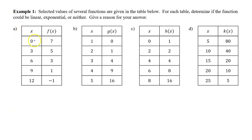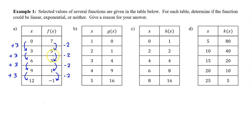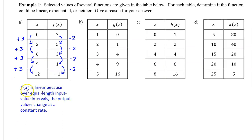Part A. Let's start by making sure we are looking at equal changes in the input. We do — successive terms are increasing by 3. Now let's check if f of x is linear by seeing if we have a constant change in the output. We do — each successive output value decreases by 2.